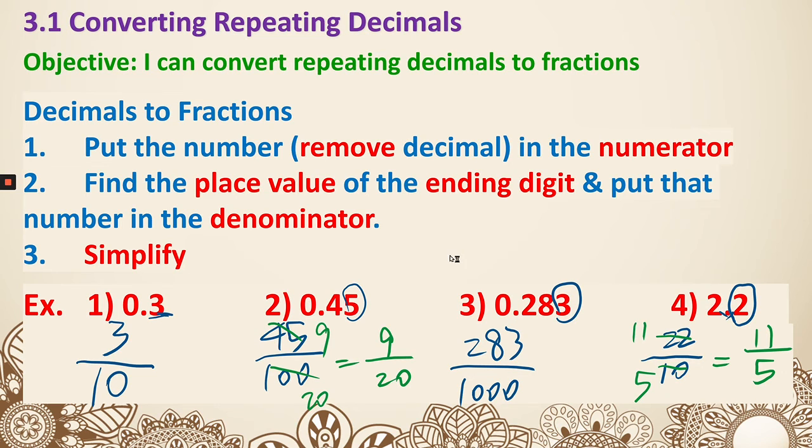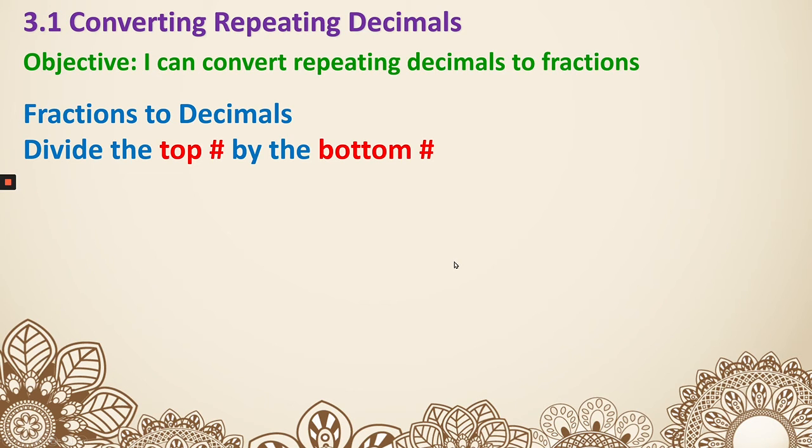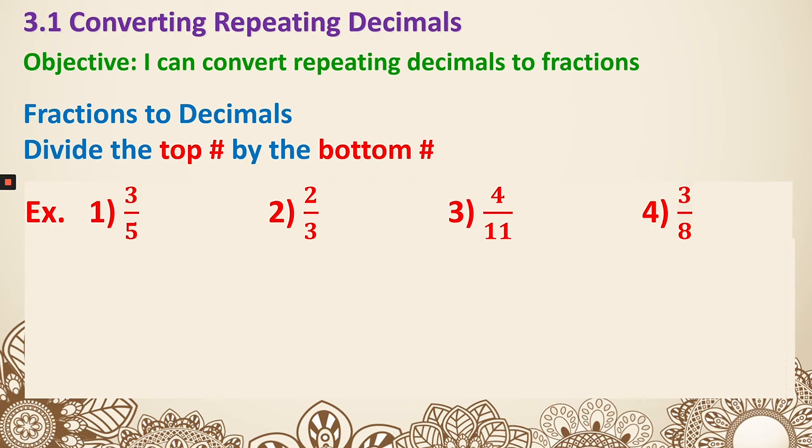Now let's look at how to change from fraction to decimal. We just divide the top number by the bottom number. Just type it in your calculator. For example, number 1, 3 over 5, we type it as 3 divided by 5, which gives us 0.6. Next, 2 over 3 is 2 divided by 3, which when you type into your calculator is 0.666 and keeps going. If the question asks you to round, say to the hundredths place, since that is a 6, you round it up to 0.67.